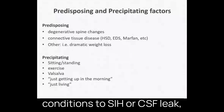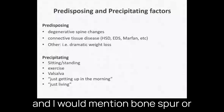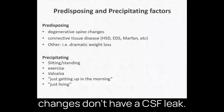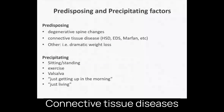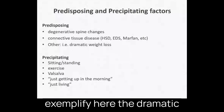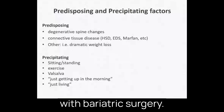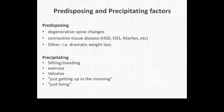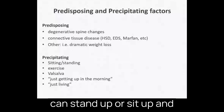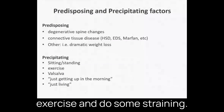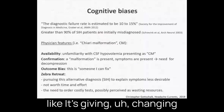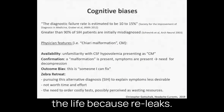There are predisposing conditions to SIH and CSF leak. Bone spurs or other spine changes may be the most common, though many patients with those changes do not have a CSF leak. Connective tissue diseases make the dura weaker. Dramatic weight loss, such as from bariatric surgery, is another predisposing factor. Some patients can stand up, exercise, and strain at some point, while others report that even breathing feels like it worsens the leak.